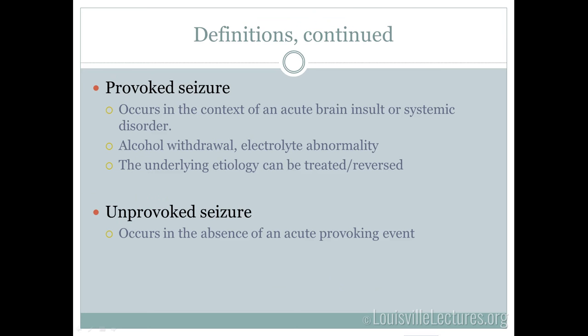A provoked seizure occurs in the context of some insult like alcohol withdrawal or an electrolyte abnormality. We can find the cause, treat the underlying etiology, and the patient may never have a seizure again. Anyone could potentially have a provoked seizure if their blood sugar dropped to 10 — that doesn't mean they're at risk for developing epilepsy long-term. Unprovoked seizures are more worrying: if you can't find a reason, those patients are more likely to have another seizure because no etiology was found.